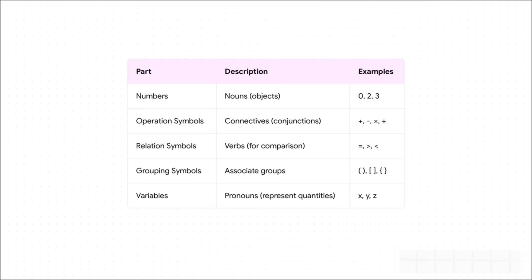Think about it. Numbers, you know, like zero, two, or three, they're basically the nouns of math. They're the objects we're talking about.